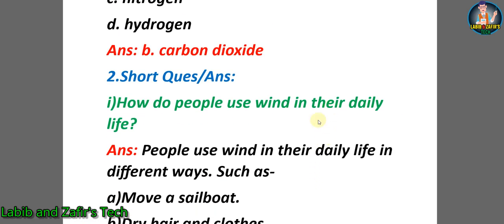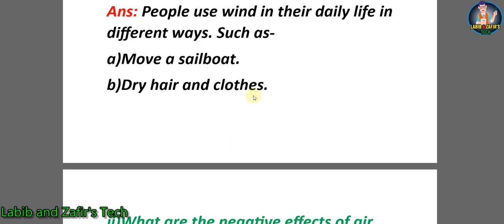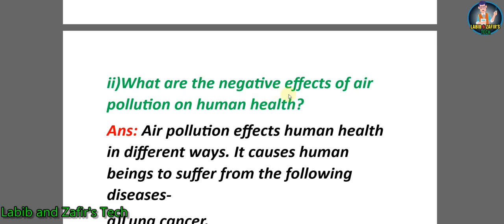Now short question answers. Number one: How do people use wind in their daily life? Answer: People use wind in their daily life in different ways such as move a sailboat, dry hair and clothes. Second question: What are the negative effects of air pollution on human health? Answer: Air pollution affects human health in different ways. It causes human beings to suffer from diseases like lung cancer and heart diseases.